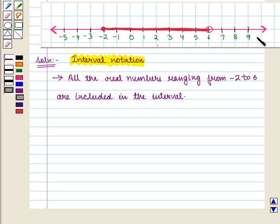Here we can see at minus 2 we have a dark filled circle, which means minus 2 is included in the interval. And at 6 we have a hollow circle, which means that this point is not included in the interval.